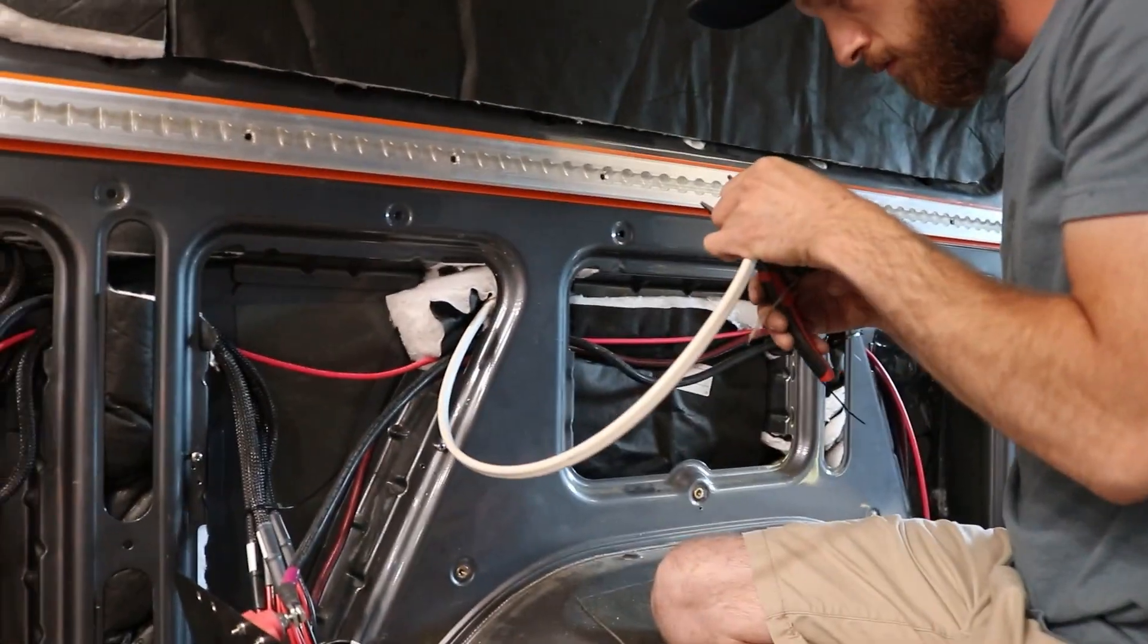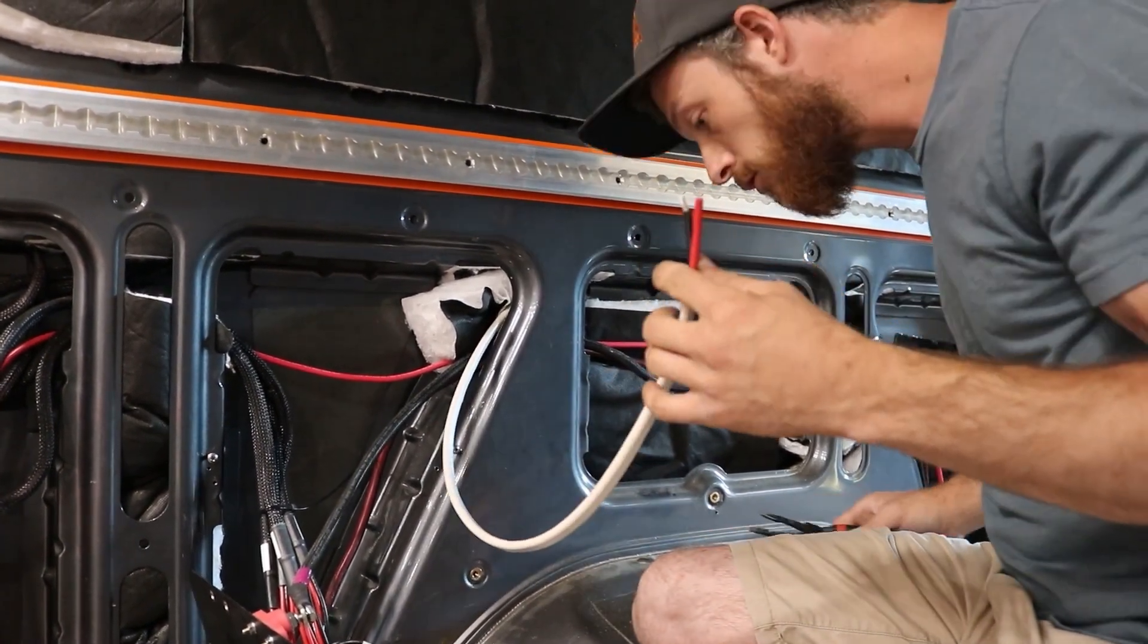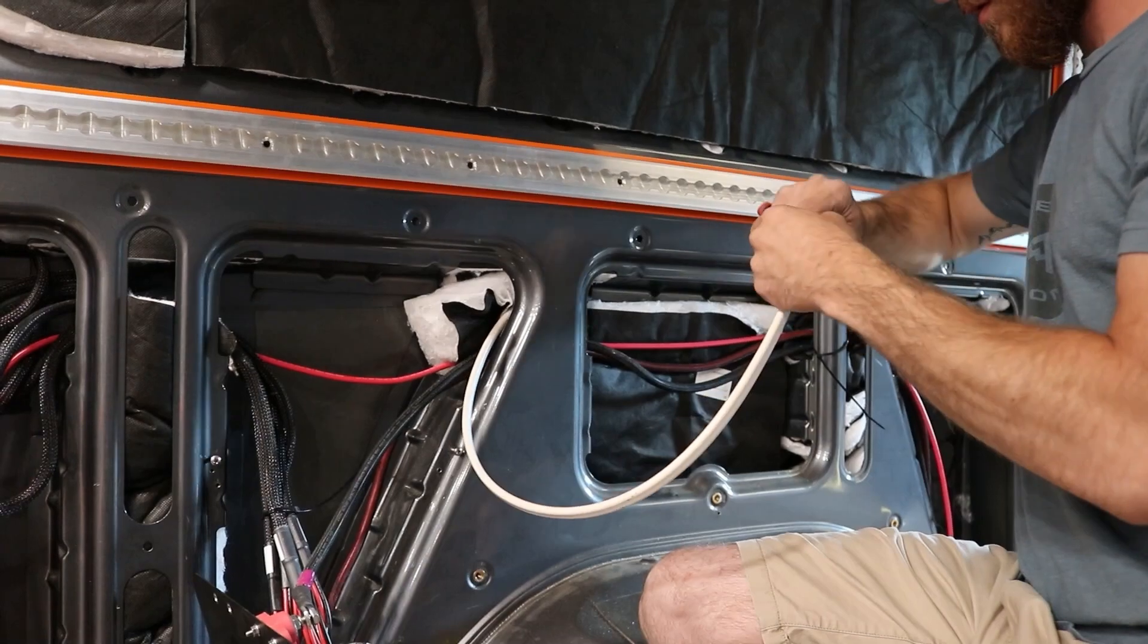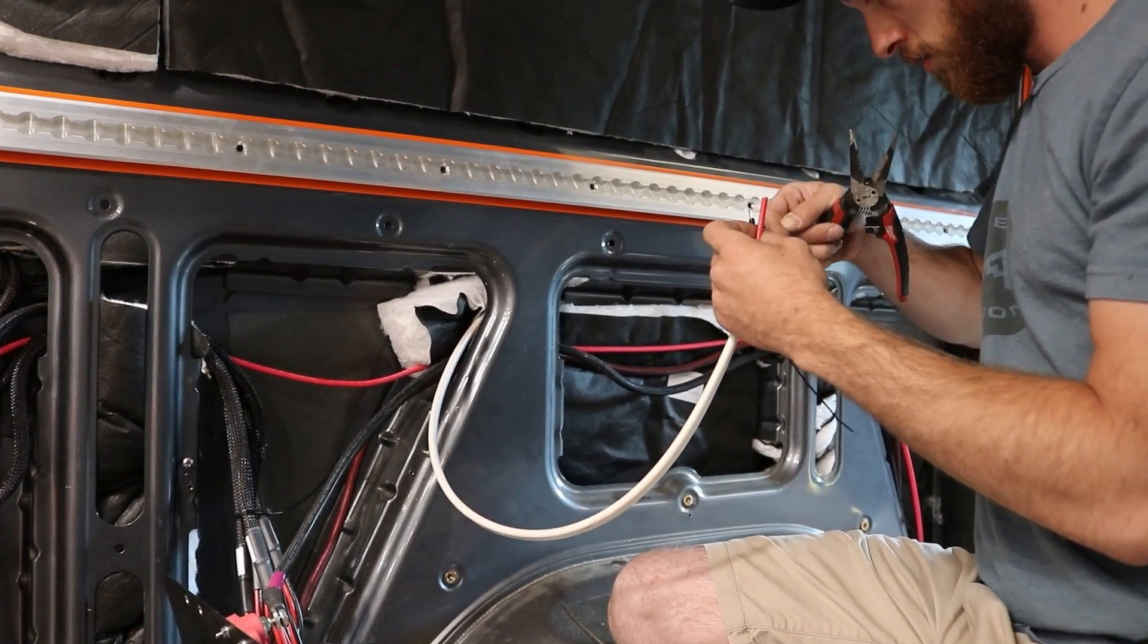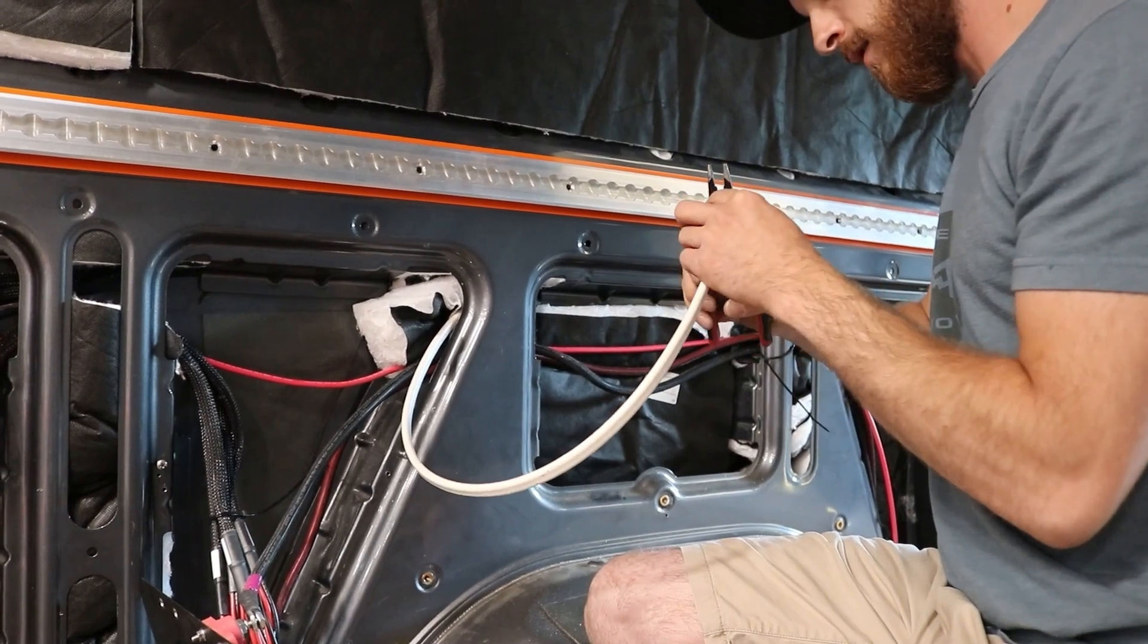If you do have a bunch of extra duplex wiring and you don't want to leave it in your wall cavity, you can cut it to the length that you need. You can also just coil it up and fit it into the wall cavity too if you think there's a chance you might move your Goal Zero in the future or you might want to extend the wiring for some reason.